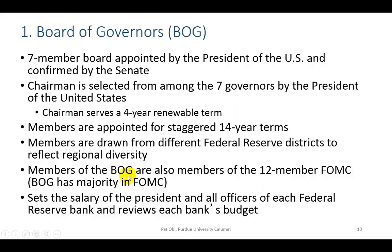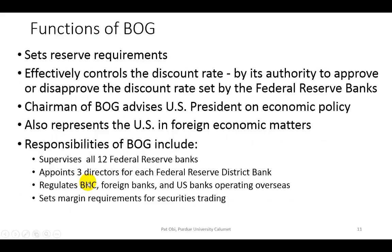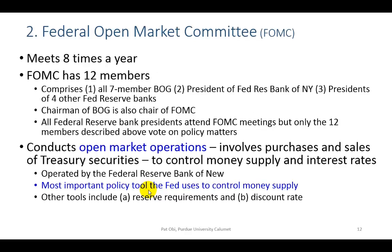Much of this is summarized here. The functions include setting reserve requirements. The responsibilities of the Board of Governors include supervising the 12 Federal Reserve Banks, appointing three directors for each Federal Reserve District Bank — with the remaining six appointed by the member commercial banks in that district — and regulating bank holding companies, foreign banks operating in the U.S., and U.S. banks operating overseas.